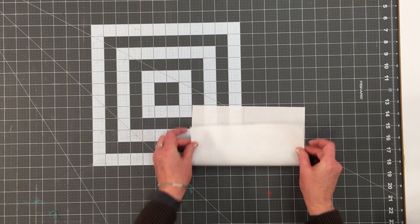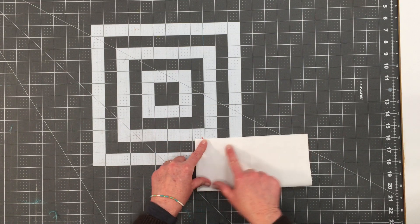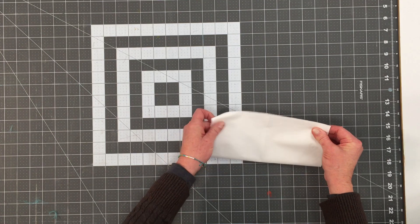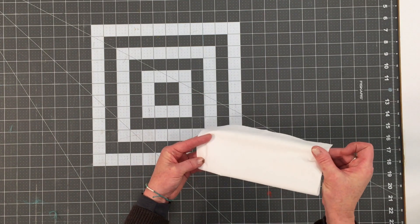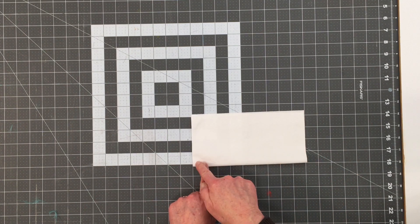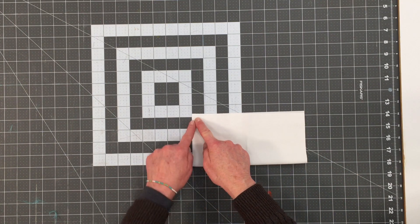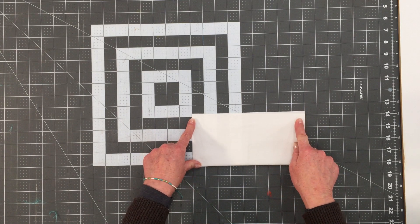So the first thing that we'll do is fold that nine by nine piece of fabric in half. Line up your edges and we're going to make a little bag for the filling, leaving one of the ends open. So I'm going to sew down here and then down the long edge, backstitching at the beginning and the end of your seam.